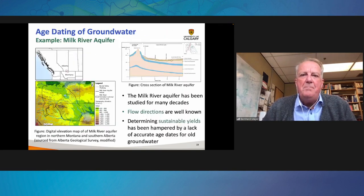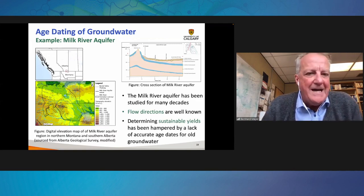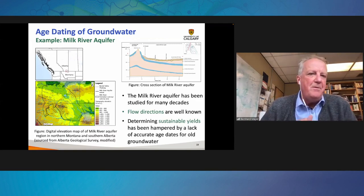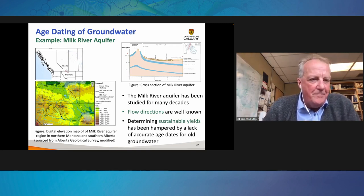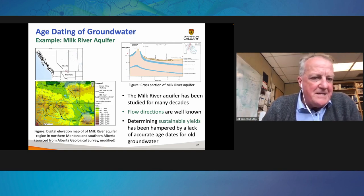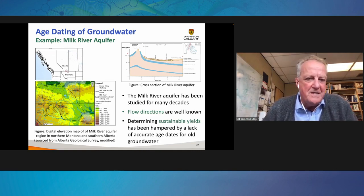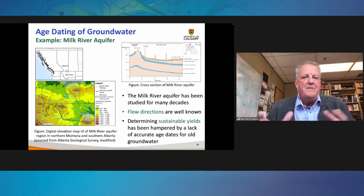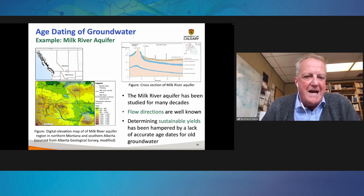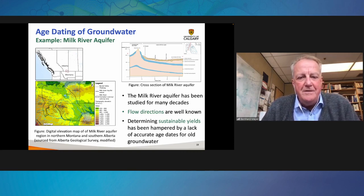In the last couple of minutes, I want to come back to groundwater age dating and show an example from the Milk River Aquifer, which is a cross-boundary aquifer where groundwater recharge typically happens in northern Montana in the Sweetgrass Hills. The groundwater then infiltrates into the subsurface and migrates northwards into southern Alberta. The Milk River Aquifer has been studied for many decades and the flow directions are relatively well understood.